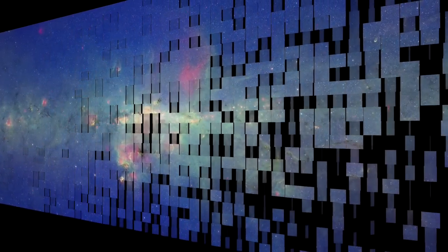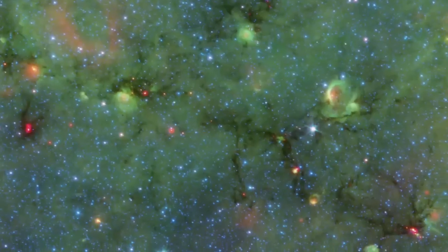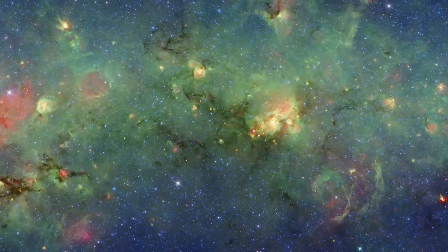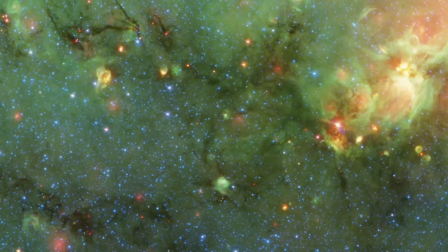It's the Milky Way as you've never seen it before. Two and a half billion infrared pixels are exposing our own galaxy in this new image from NASA's Spitzer Space Telescope.